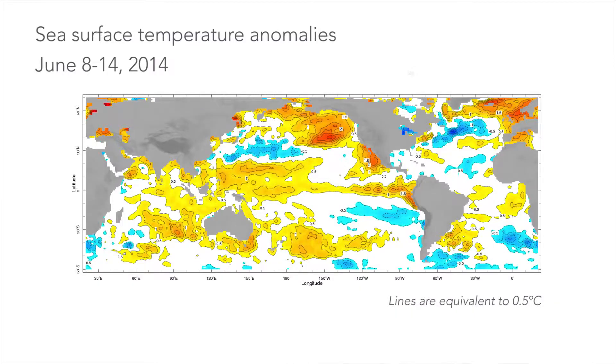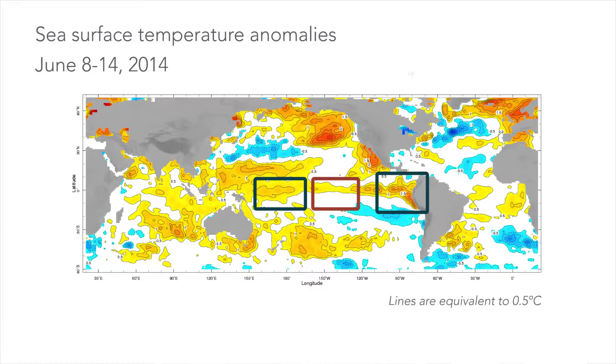Right now, the sea surface temperature patterns show positive anomalies above normal, both near the International Dateline and in the far eastern part of the Tropical Pacific near Ecuador and Peru, but not in the region in between, which is where we consider it to be most important and most indicative of an El Niño sea surface temperature pattern. That area is only borderline, but those other two areas are farther above the average, and the one near Peru and Ecuador has actually been impacting their climate quite a bit already, with above-normal rainfall along the coasts in those areas.